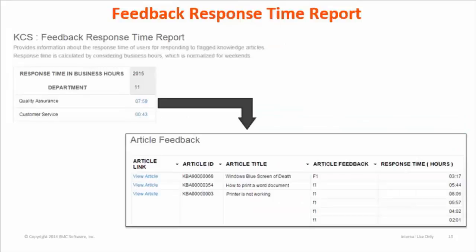This is the Feedback Response Time report. This report helps you know the timeliness of users to fix issues in articles flagged for improvement. Feedback response time is the time elapsed between flagging and fixing articles, and is an important factor in measuring user performance. The report is generated on the basis of business hours and displays the average response time spent to fix an article. To view detail about each article response time, click on business hours.